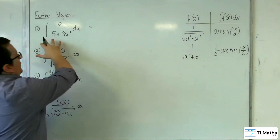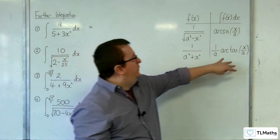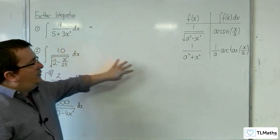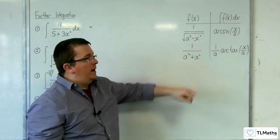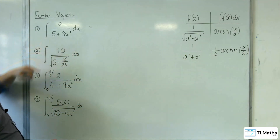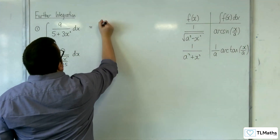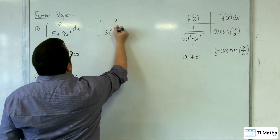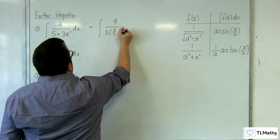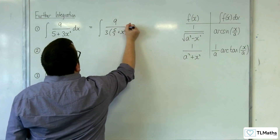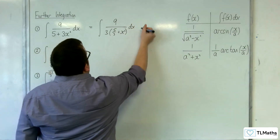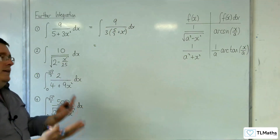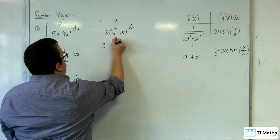There's no square root sign so we know it's going to be of the form arc tan. But the problem is we've got 3x squared and we want 1x squared, so I need to factor the 3 out of the denominator. We'll have the integral of 9 over 3 lots of 5 thirds plus x squared dx. 9 over 3 is just 3 and I can factor the 3 out of the integral.